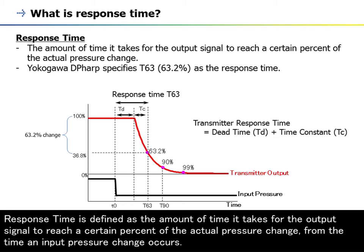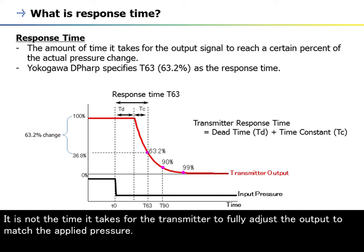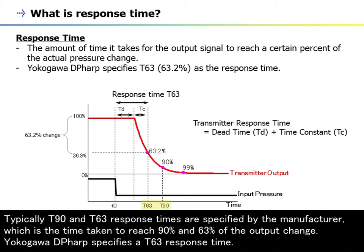Response time is defined as the amount of time it takes for the output signal to reach a certain percent of the actual pressure change, from the time an input pressure change occurs. It is not the time it takes for the transmitter to fully adjust the output to match the applied pressure. Typically T90 and T63 response times are specified by the manufacturer, which is the time taken to reach 90% and 63% of the output change.